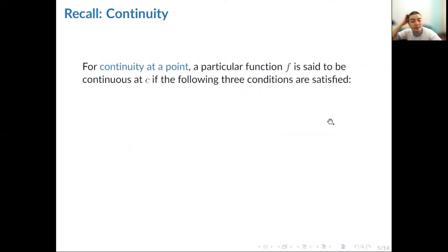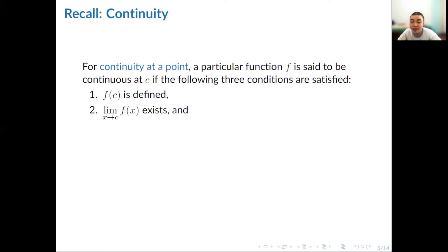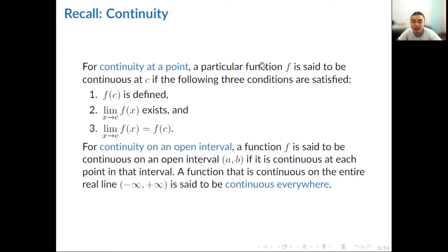Now let's review the concept of continuity. A function f is said to be continuous at c if the following three conditions are satisfied: first, f of c must be defined; second, the limit of f of x as x approaches c must exist; and third, the limit of f of x as x approaches c must equal f of c. If any one of these is not satisfied, f is automatically discontinuous at c. For continuity on an open interval, a function f is continuous on an open interval (a, b) if it is continuous at each point in that interval. If continuous on the entire real line, the function is said to be continuous everywhere.